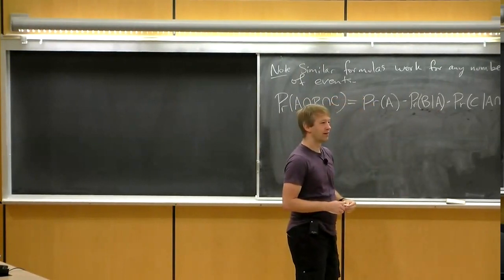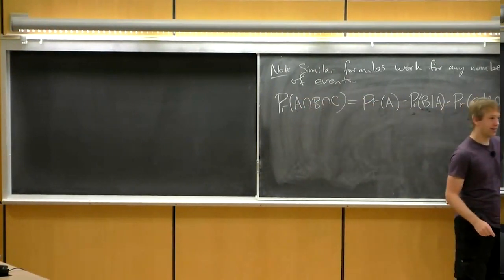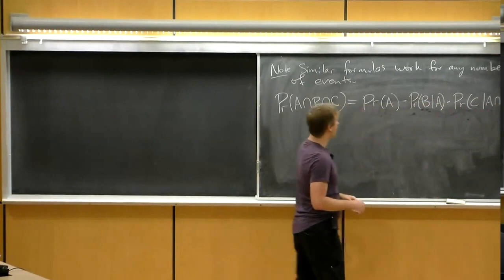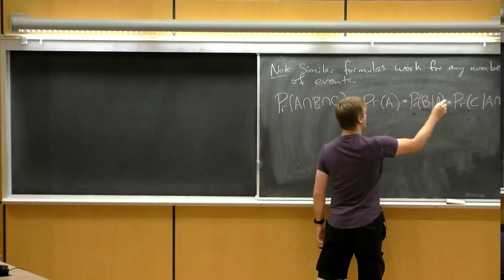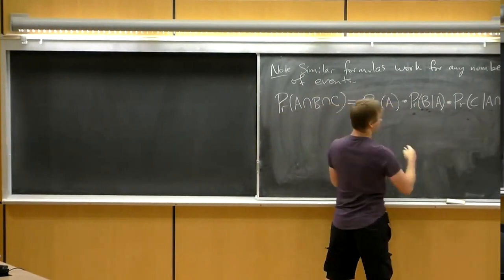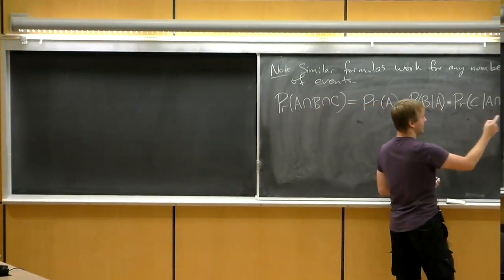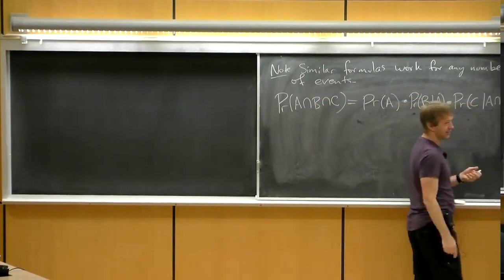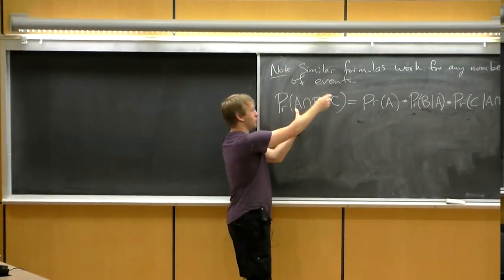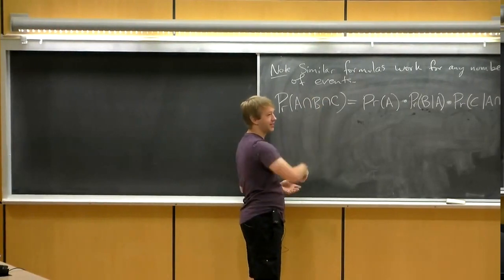To clarify: for the intersection of multiple events you're always multiplying, not adding. For four variables, you'd have four factors: P(A) · P(B|A) · P(C|A,B) · P(D|A,B,C). If you wanted multiple regions of a Venn diagram, you would then add those products together. Each product gives you one region.